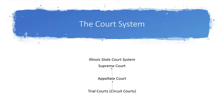Once the decision is made at the appellate court, the parties may appeal to the Supreme Court. However, the right of appeal is not automatic — it's limited, and the Supreme Court will accept very few appellate court cases to review.